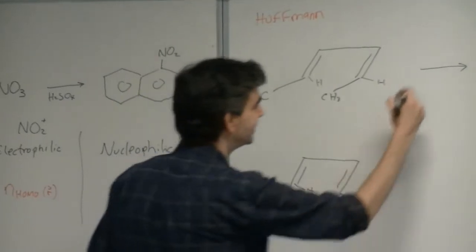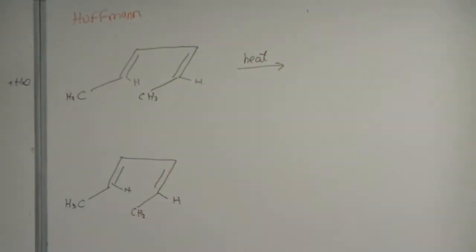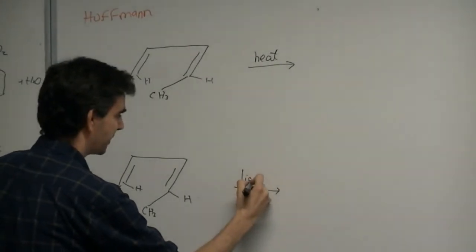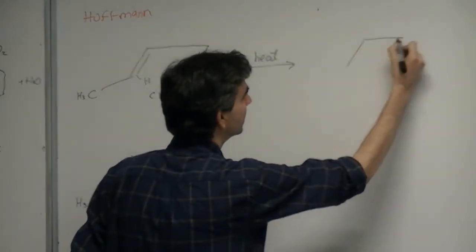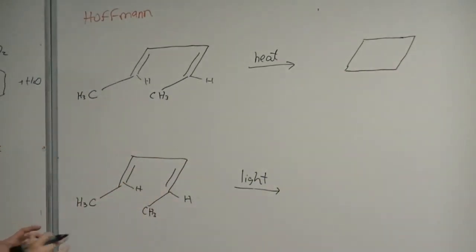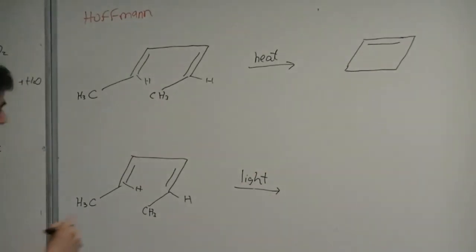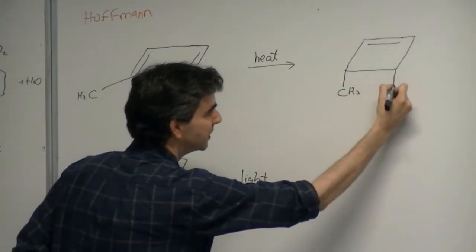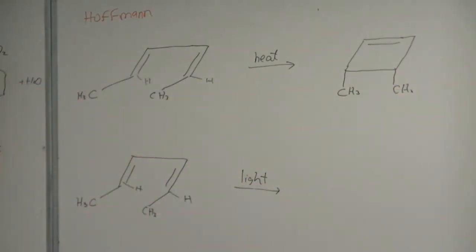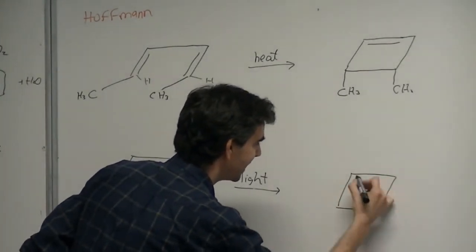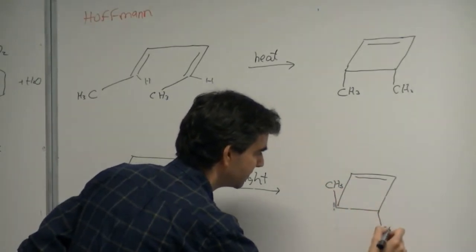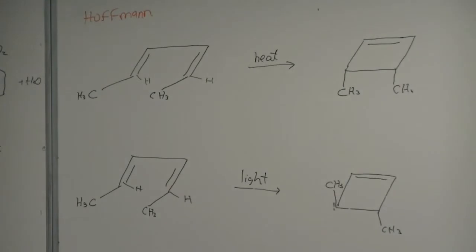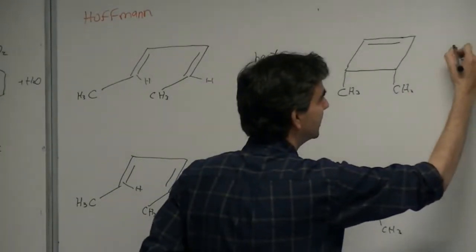The first reaction happens in the dark with heat; the second happens in the presence of light. In the first case, you form cyclobutene with one double bond, and almost exclusively the cis compound — with both methyl groups sticking in the same direction. For the light reaction, one methyl group sticks up and the other sticks down — giving the trans compound.